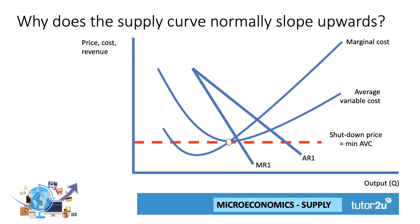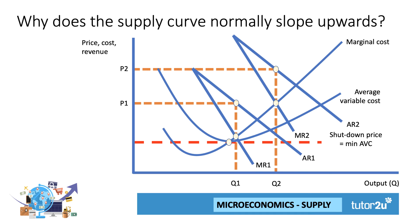I've put in here two revenue curves — MR1 and AR1. Given those levels of demand, that gives a profit-maximising output of Q1, which can be sold for a price of P1. Now, if demand was to shift outwards, MR1 and AR1 both shift out and to the right to a higher level of demand in the market, and the equilibrium profit-maximising quantity rises from Q1 to Q2 — the intersection between marginal cost and marginal revenue. So the firm expands production to Q2, moving up the marginal cost curve — up their supply curve — and they can sell that output at the higher price P2.